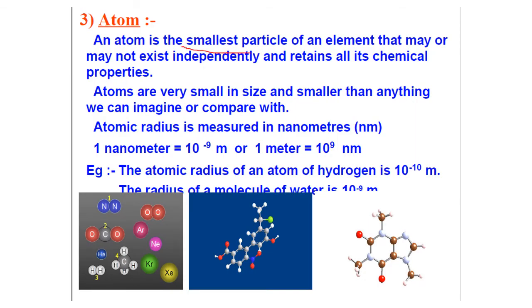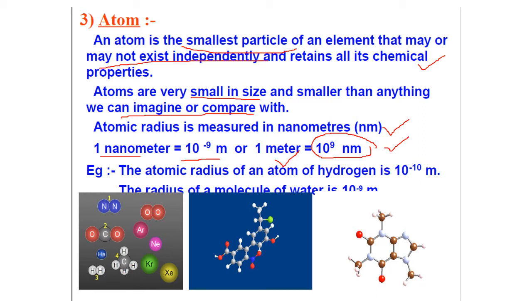An atom is the smallest particle of an element. Atoms may or may not exist independently and retain all the chemical properties of the element. Atoms are very small in size — smaller than anything we can imagine or compare with. Atomic radius is measured in nanometers, which is a very small quantity. One nanometer is equal to 10 raised to the power minus 9 meters, and one meter equals 10 raised to the power 9 nanometers.